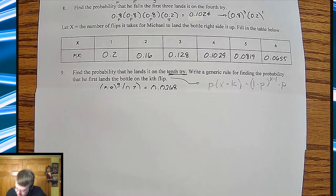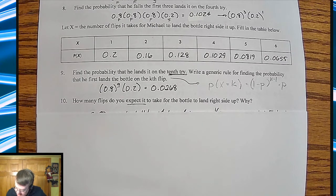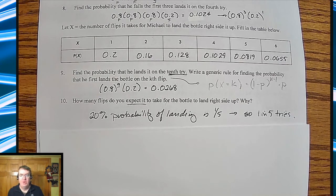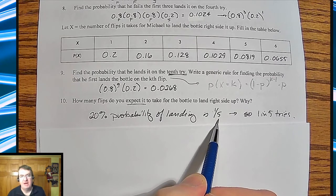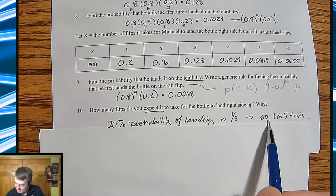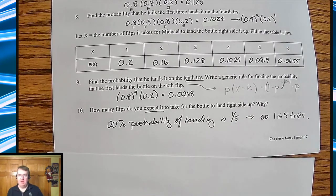So then the next question becomes, how many flips do you expect it to take for the bottle to land right side up? And why? Well, since there's a 20% probability of landing right side up, that's one out of five. So think about it. You're going to get one success out of every five tries. So that's why you would say, okay, it's going to be one out of five.